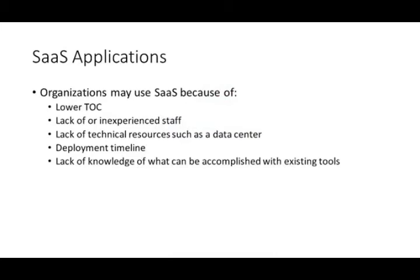Lack of knowledge of what can be accomplished with existing tools is another reason organizations use SaaS. For example, Slack versus Jabber versus Skype for Business — chances are one of those tools is sanctioned and one is not. Slack may be an unsanctioned communication tool, but it's a SaaS model people use because they can purchase and start using it within five minutes.